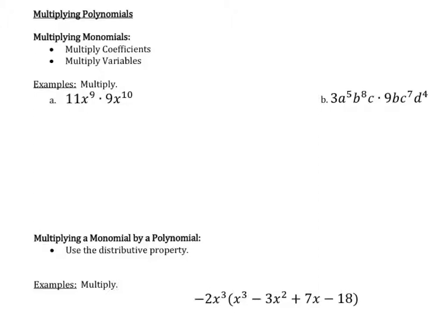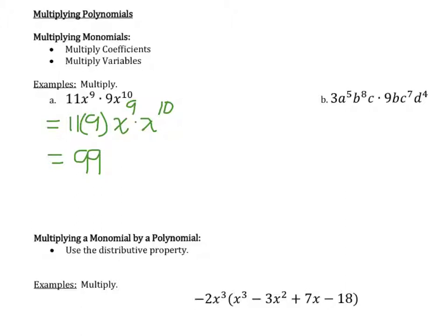Multiplying monomials is as simple as multiplying the coefficients and then multiplying the variables in those monomials. In this example, we have 11x to the 9th times 9x to the 10th. My coefficients are 11 and 9, so I multiply 11 times 9. My variable parts are x to the 9th times x to the 10th. 9 times 11 is 99, and with our exponents we add them when we multiply, so 9 plus 10 is 19. So 11x to the 9th times 9x to the 10th is 99x to the 19th.